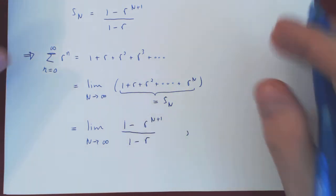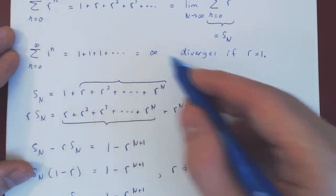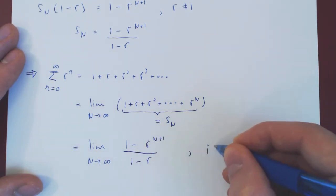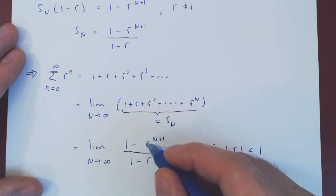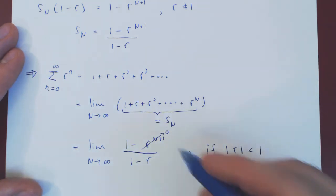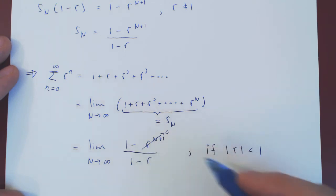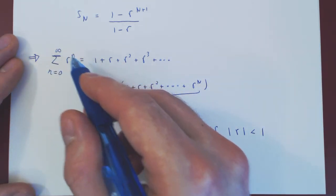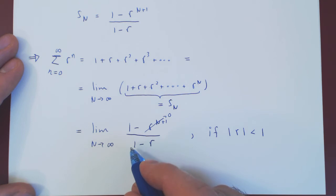This limit only exists — omitting the case r equals 1 since we know the series diverges there — if the absolute value of r is strictly less than 1. Then r to the N plus 1 shrinks to 0. For example, if r is 1/10, you would have 1/10, 1/100, 1/1000, 1/10000, and so forth, converging to 0. So if the absolute value of r is strictly less than 1, the infinite geometric series 1 plus r plus r squared plus r cubed plus r to the 4th and so forth equals simply 1 over (1 minus r).